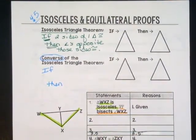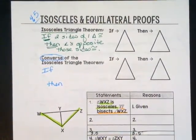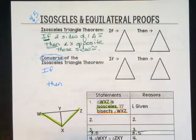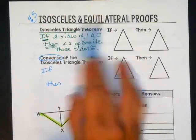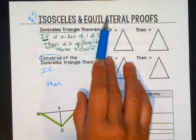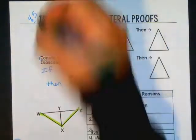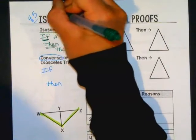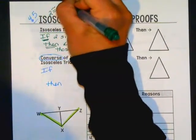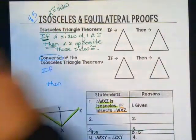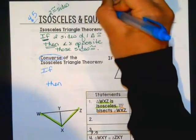We are starting section 4.5. We did skip 4.4, so you didn't miss anything. 4.5 has two special kinds of triangles that we're going to talk about. Isosceles — most of you know an isosceles triangle means you have two congruent sides. Equilateral — most of you know that means you have three congruent sides.